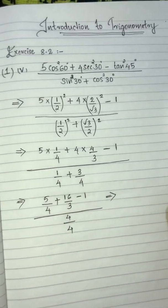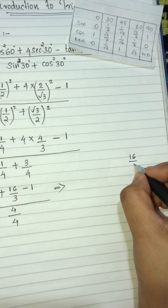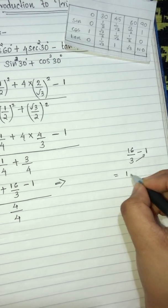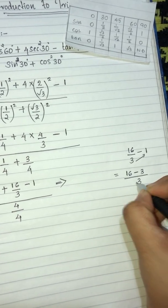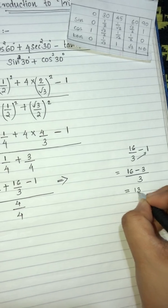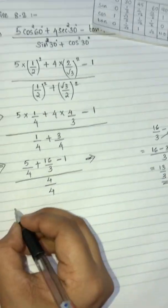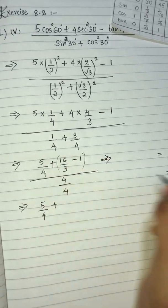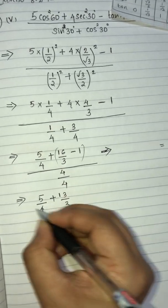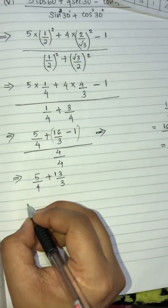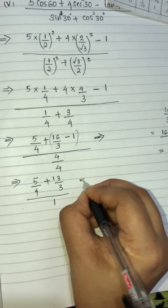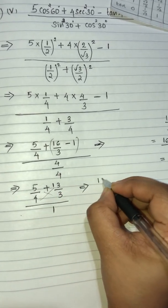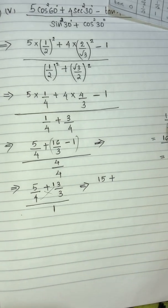Multiply this out: 16/3 minus 1 — multiply 3 × 1 = 3, so 16 − 3 divided by 3, that is 13/3. Then 13 × 4 = 52.